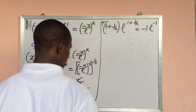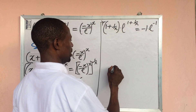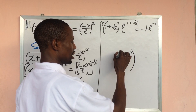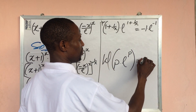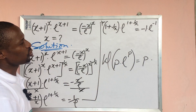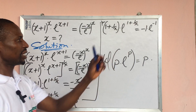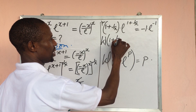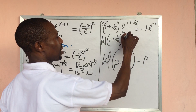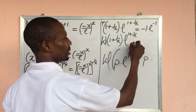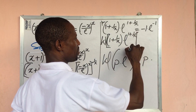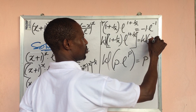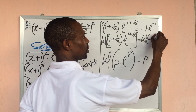The Lambert W function says: if you have p dot e to the power of p, then taking the Lambert W function of that gives p. So applying the Lambert W function to both sides: the left side becomes W of bracket open 1 plus 1 over x close bracket, dot e to the power of 1 plus 1 over x, in square brackets. The right side is W of bracket open minus 1 dot e to the power of minus 1 close bracket.